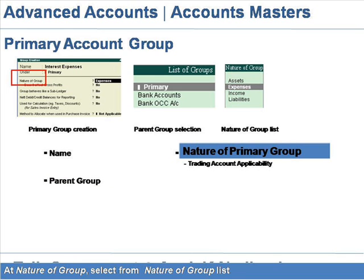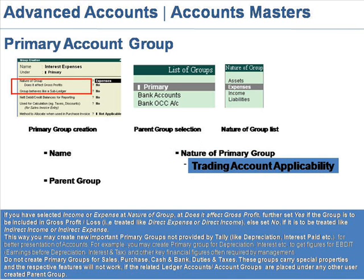At Nature of Group, select the nature of the group from the list. Regarding trading account applicability: if you have selected Income or Expenses at Nature of Group, at 'Does it affect gross profit?' set Yes if the group is to be included in gross profit or loss, else set No if it is to be treated like indirect income or indirect expense.